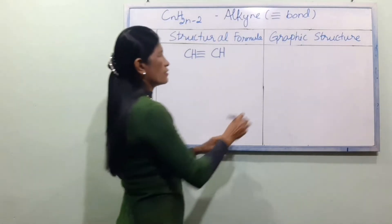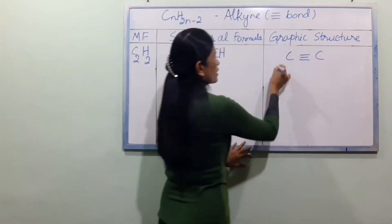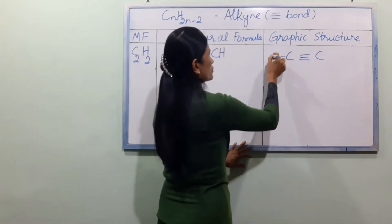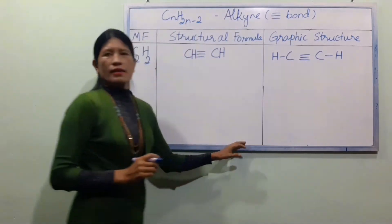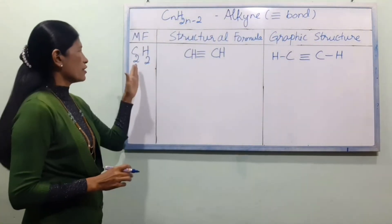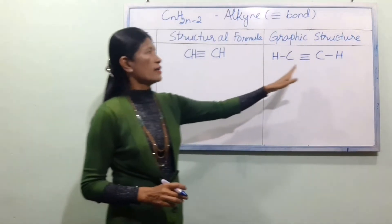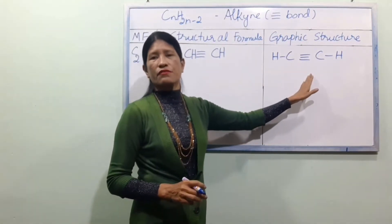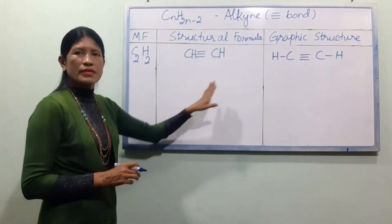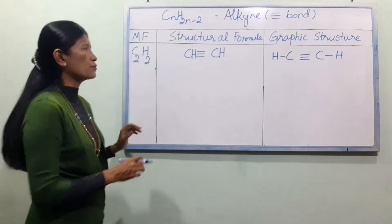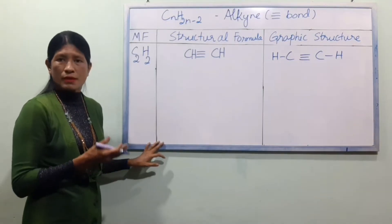The graphic structure formula is CnH3n-2. This is the graphic formula. If you don't see this specific formula for ETM, please check the system of nomenclature.